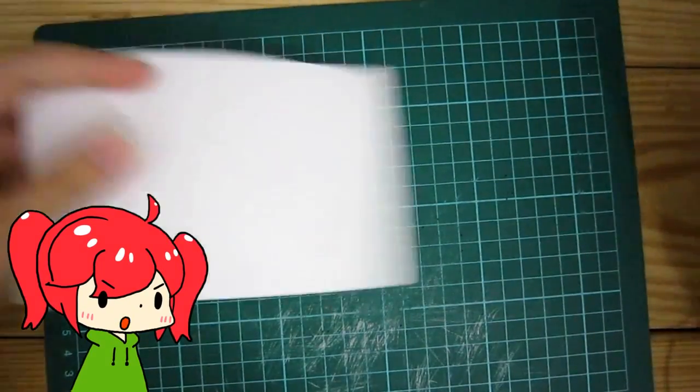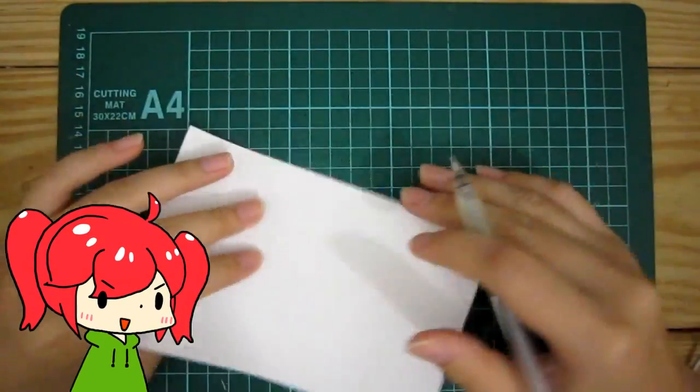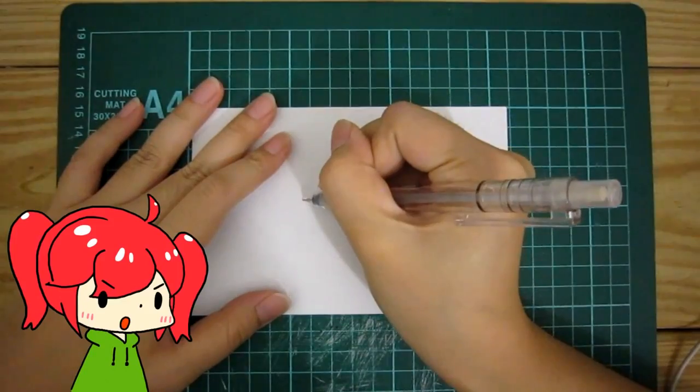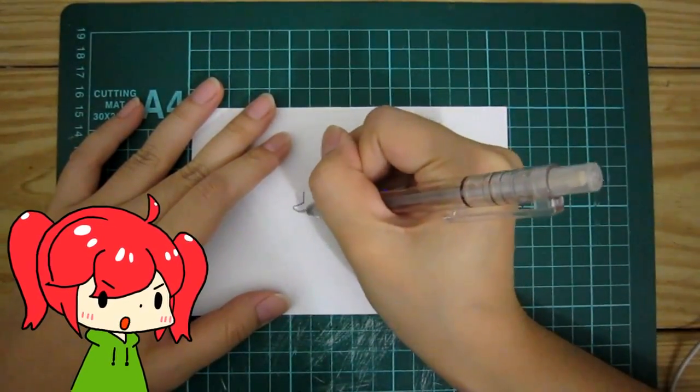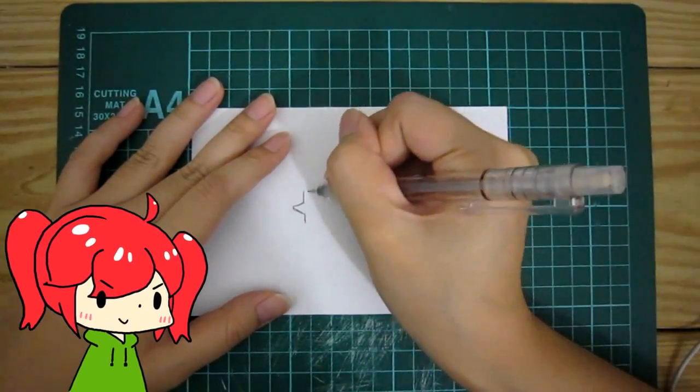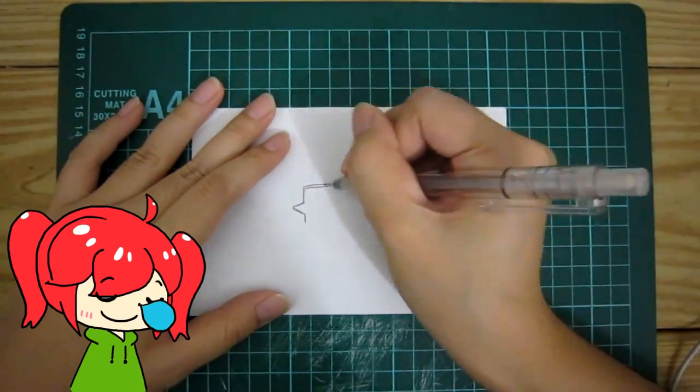Design your stamp. Draw a picture on the paper with the pencil so that we can put the picture on the rubber later.